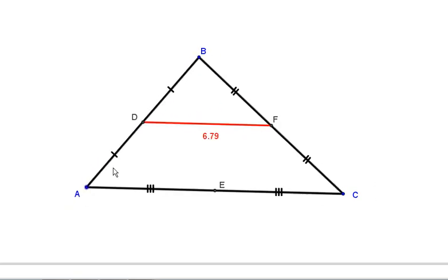Well, let's see how that length compares to what's called the third side. Because DF connects sides AB and CB, we call AC the third side.